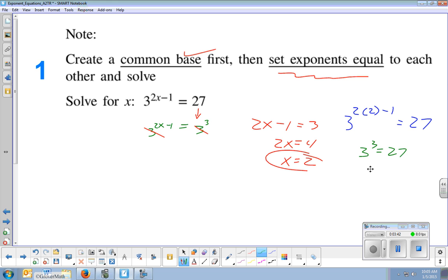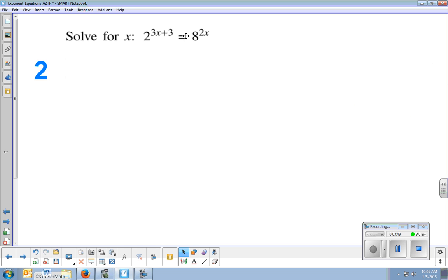So you end up with 3 to the 3rd equals 27. And maybe you don't need a calculator for that one. But it checks out just fine. So it's definitely worth it to check here.